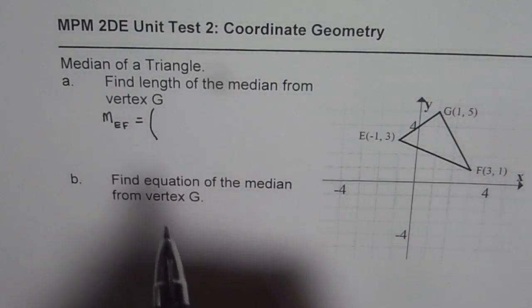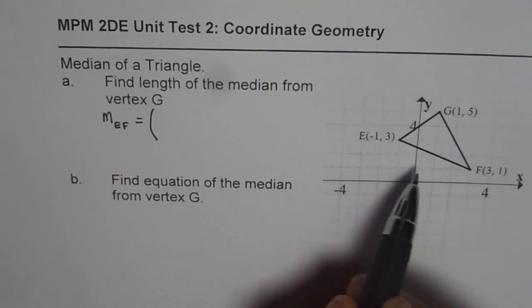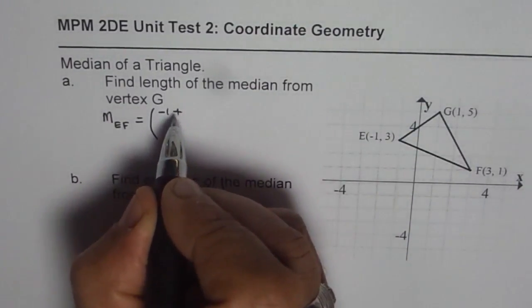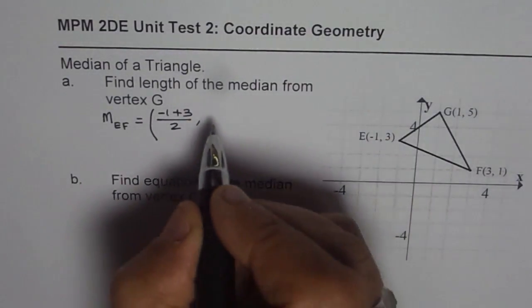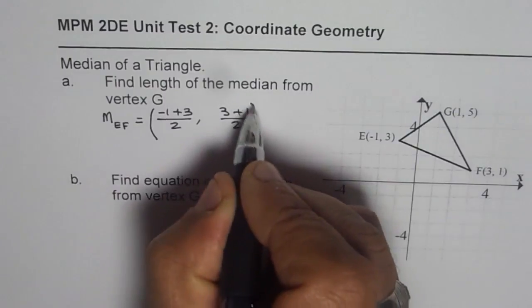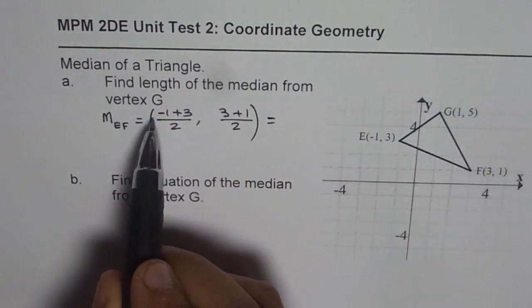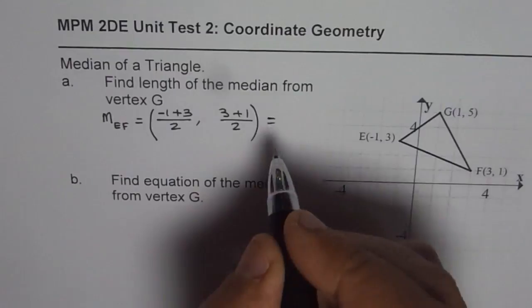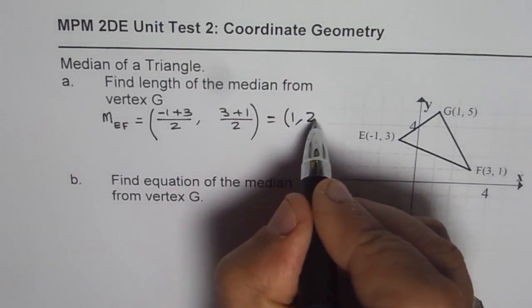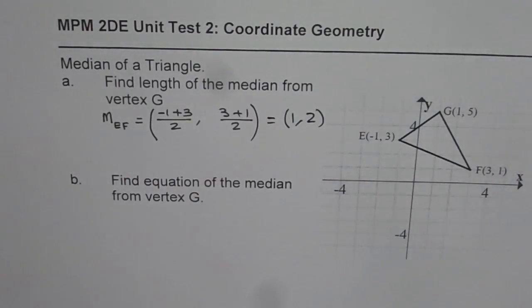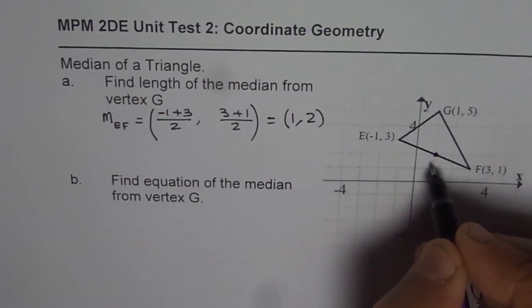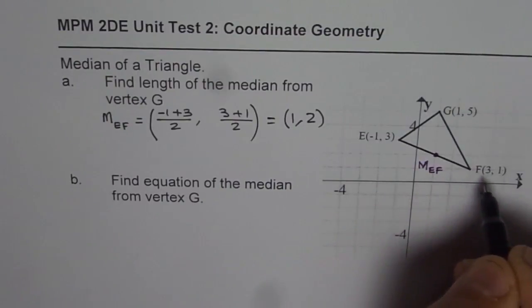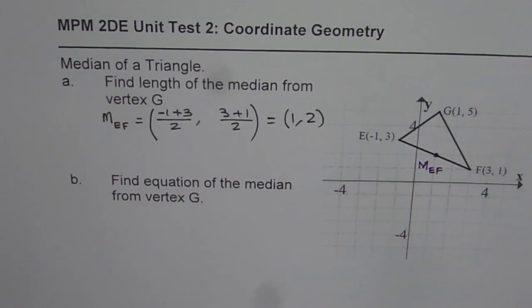So we get the midpoint of EF as minus 1 plus 3 divided by 2. That is the x value. The y value would be 3 plus 1 divided by 2. So that is indeed equals 2. Minus 1 plus 3 is 2. 2 over 2 is 1. And 4 over 2 is 2. So the midpoint is 1, 2. So let's locate this. 1, 2. So that becomes a midpoint. And I am calling this point as M_EF. So midpoint of line segment EF. So that is a good nomenclature to follow.